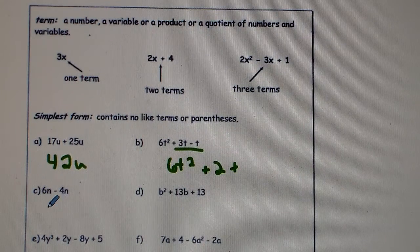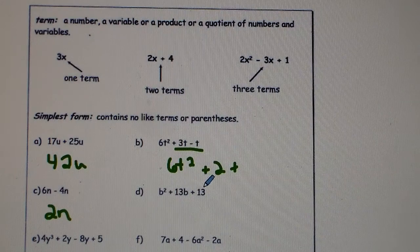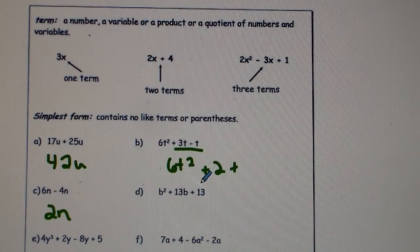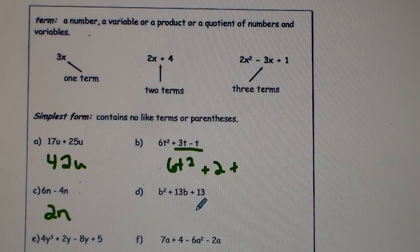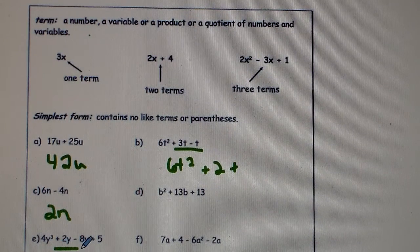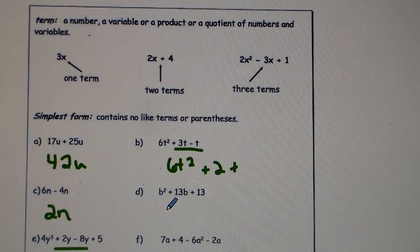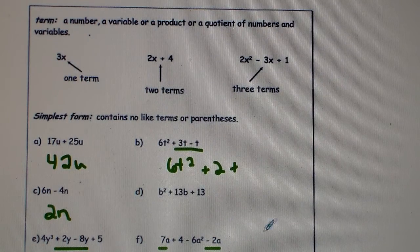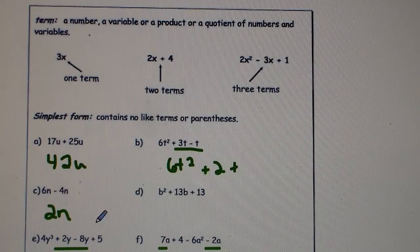For example C, 6n − 4n gets us 2n. In example D, b² + 13b + 13: all three terms are different — the first has b², the next has b, and the last has no b — so it stays the same. In example E, combine the 2y and the negative 8y, and everything else stays the same. In example F, the negative 2a and the 7a combine to 5a, then rewrite the other two terms as well.